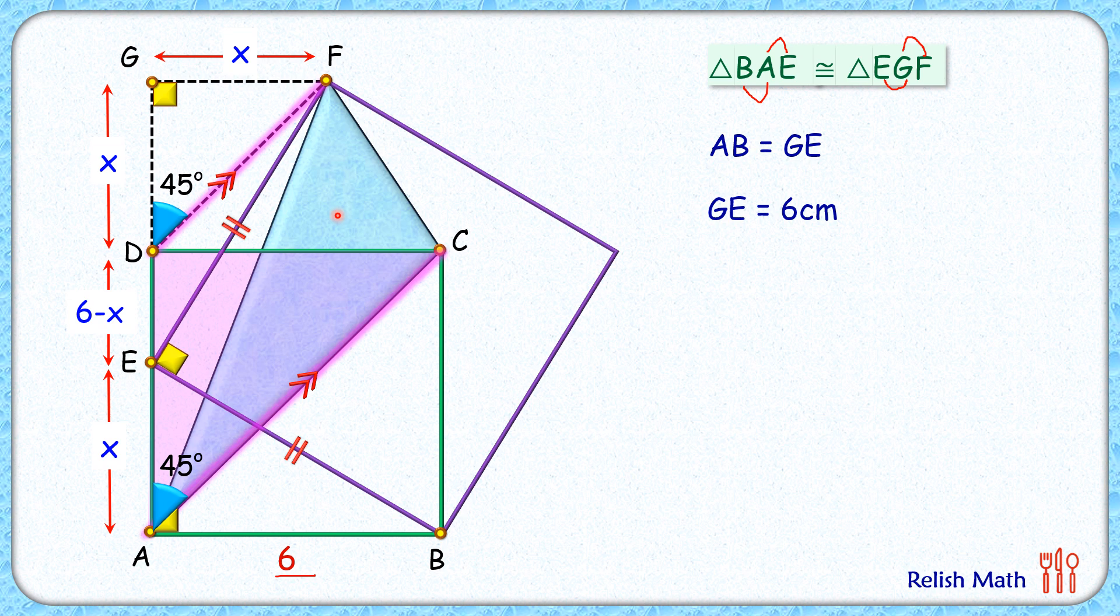So we can say that the area of the blue triangle, which we had to find, is the same as the area of this pink triangle. And the area of the pink triangle is half the area of the green square. So the area of this blue triangle is nothing but half of 36, or 18 centimeters square. And that's our answer.